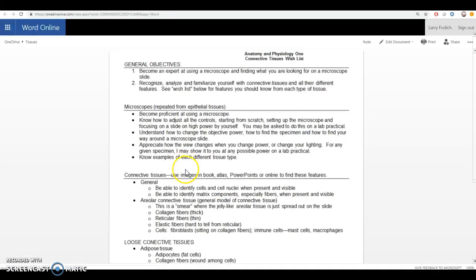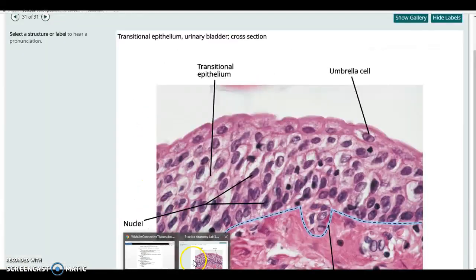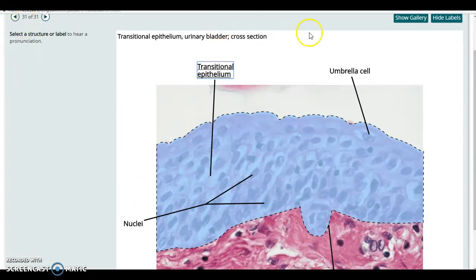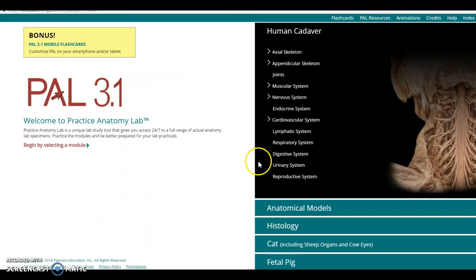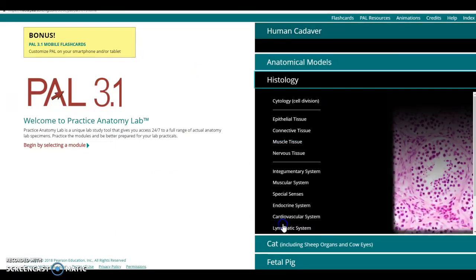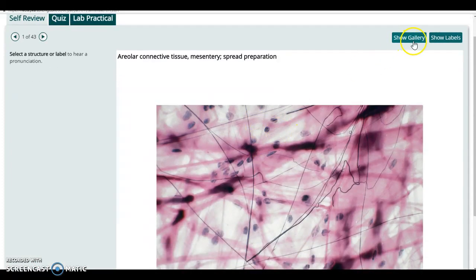You just want to be sure you're looking at everything on that wish list as you go through the tissues in the PAL or practice anatomy lab program. So in PAL, we'll start from the main page, you're going to look at histology, and then connective tissues, and we'll turn the labels on so everything lights up nicely.